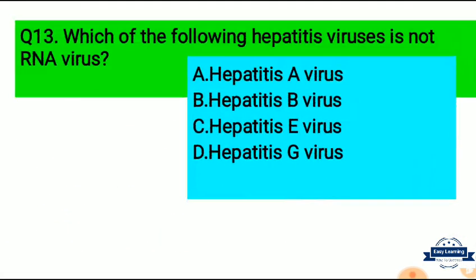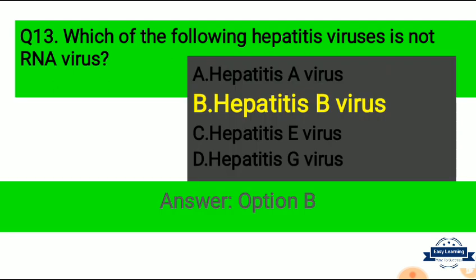Question 13: Which of the following hepatitis viruses is not an RNA virus? Option A: Hepatitis A, Option B: Hepatitis B, Option C: Hepatitis E, Option D: Hepatitis G. Correct answer is Option B — Hepatitis B virus is not an RNA virus; it is a DNA virus.